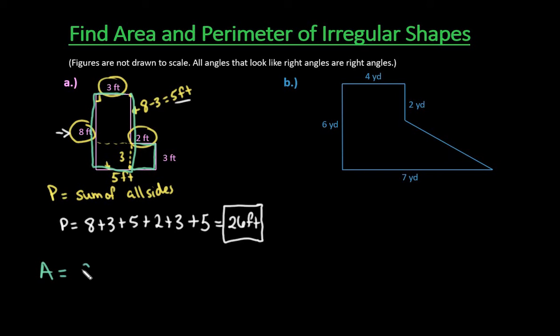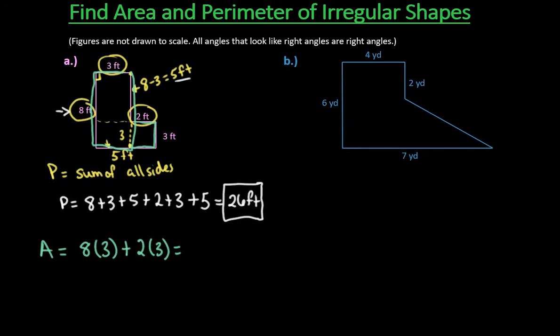So I'm going to do eight times three for the first one, and then I'm going to add to it the two times three for the second one. And so if we simplify this, eight times three gives us 24 plus six, ends up giving us 30 square feet.